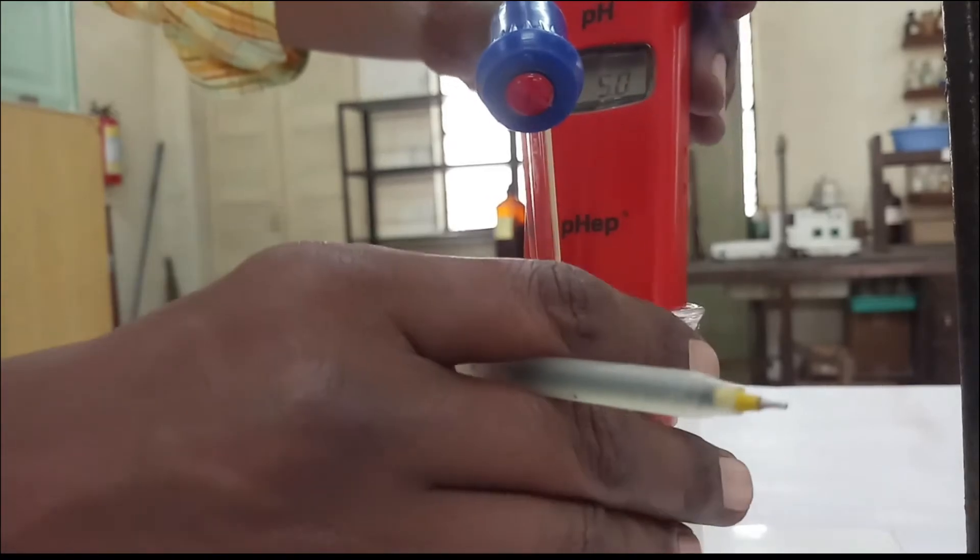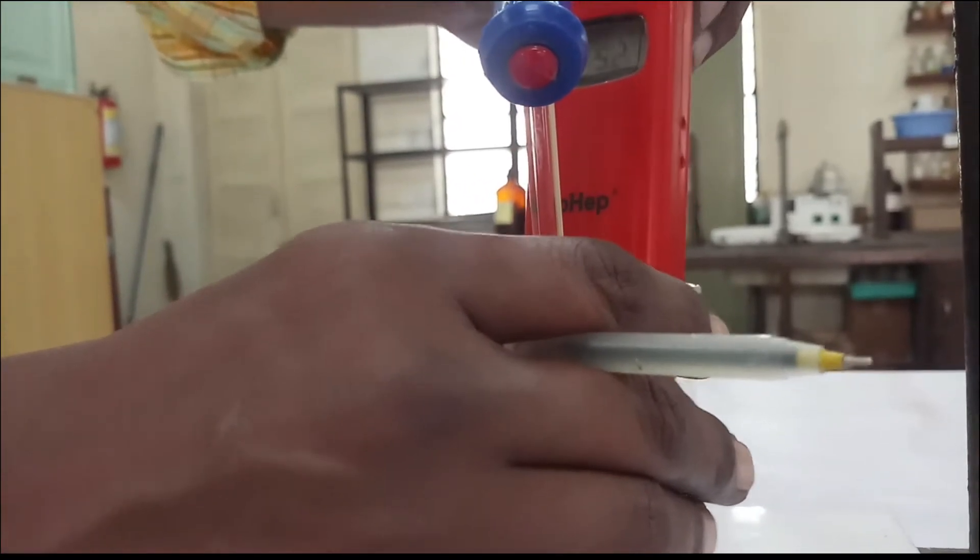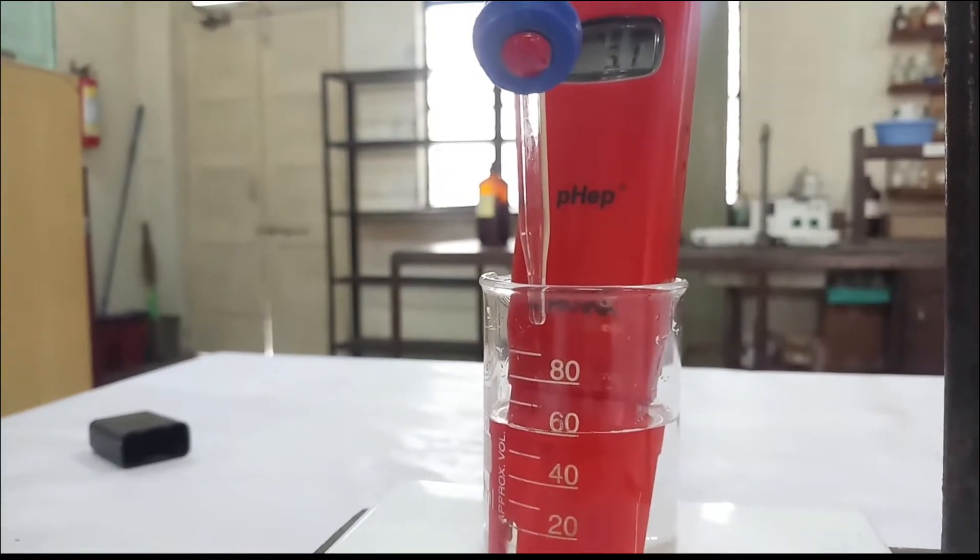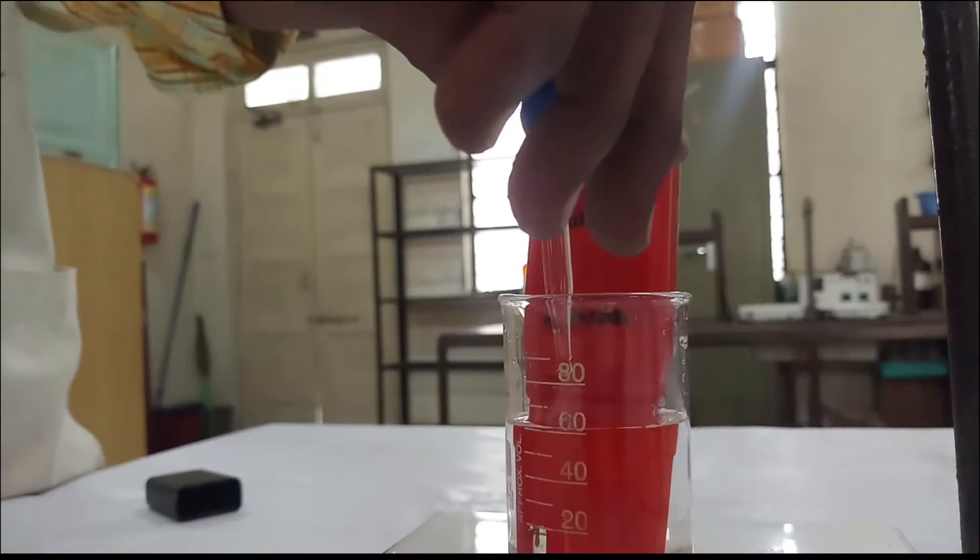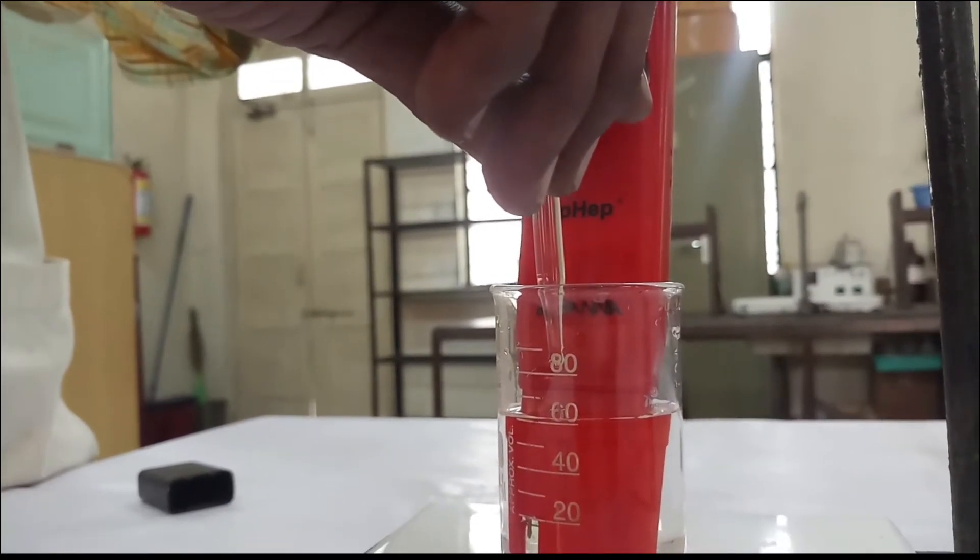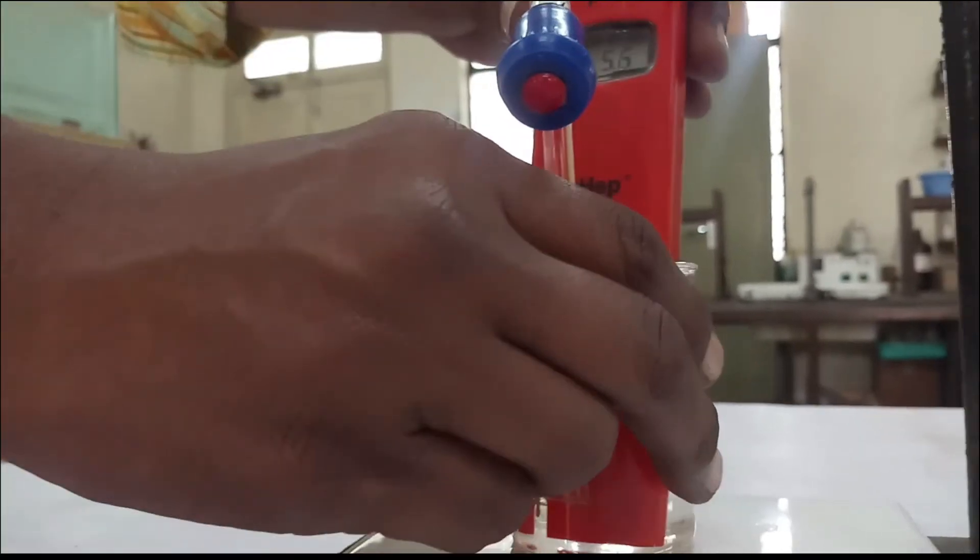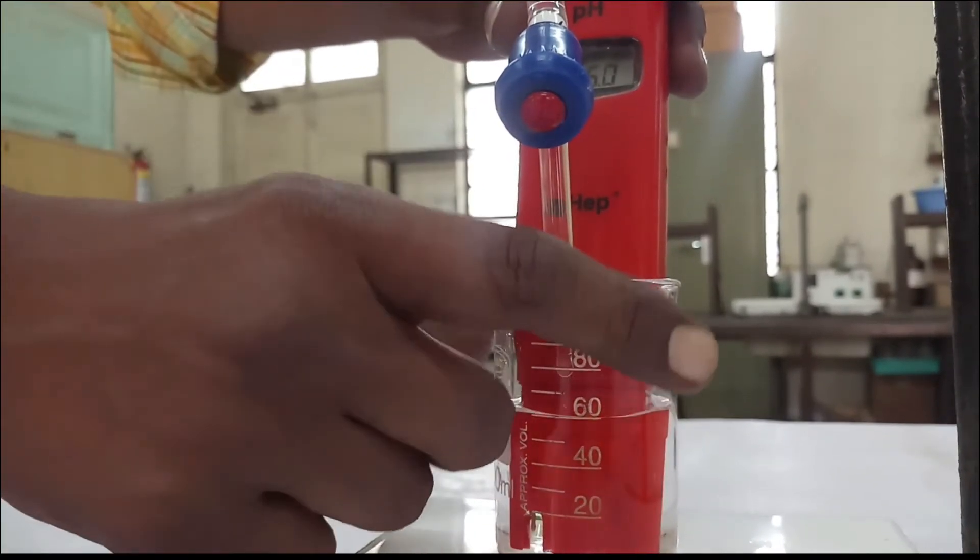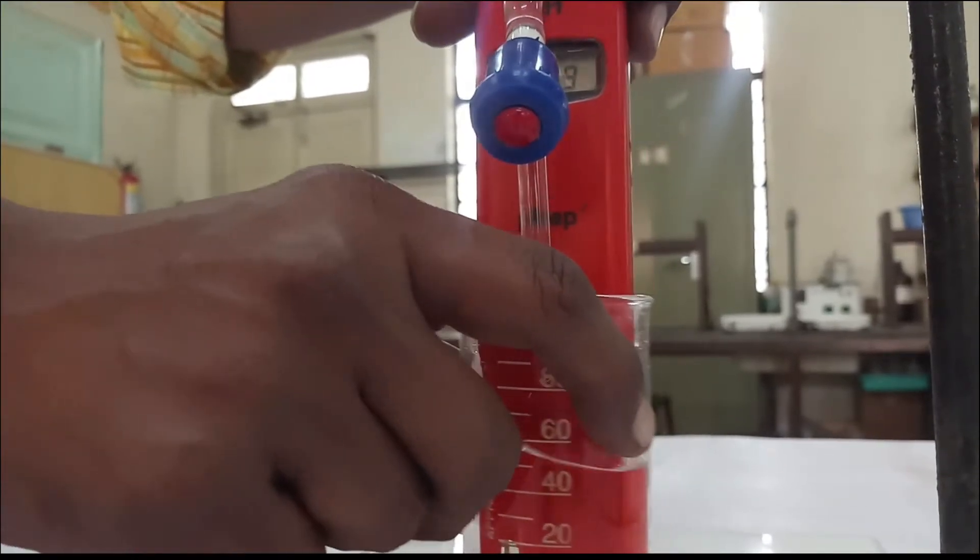So go on noting down the pH. Now it is showing 5.0. So go on adding 0.2 ml every time and just go on noting down the pH. Now it is showing 6.0.